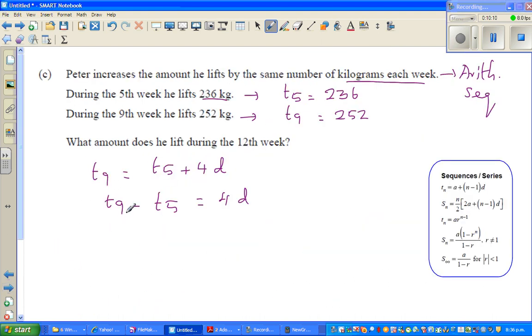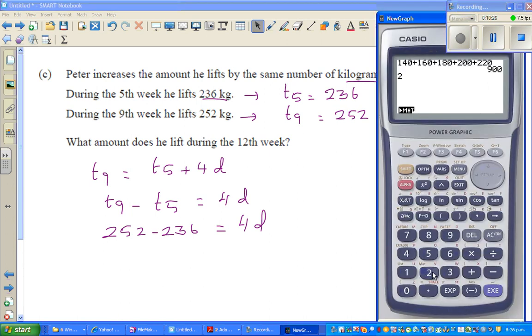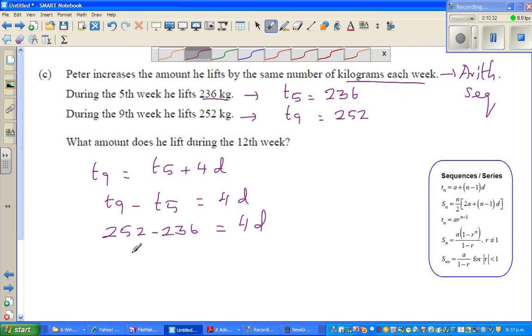So this is 252 minus 236 equals 4d. This is 16. Let me confirm: 252 minus 236, yeah, 16. So 4d is 16, which implies d is 4. The common difference is 4.